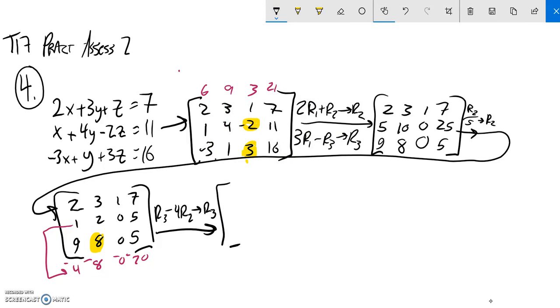And if I do that, 9 minus 4 is 5. 8 minus 8 is 0. Good. 0 minus 0 is 0. 5 minus 20 is negative 15. Good. I know what X is. And the other two rows are what they were before.